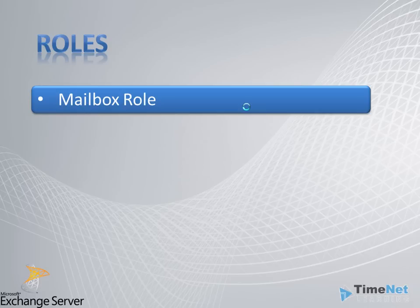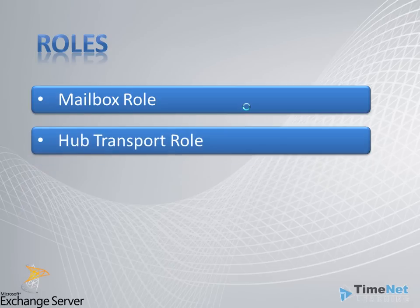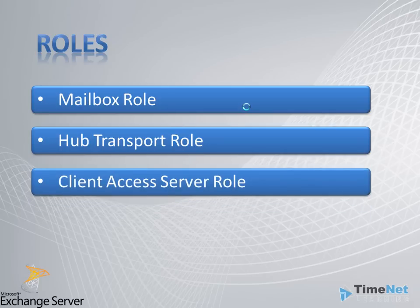The first role is the Mailbox Store, which is responsible for saving all emails. It is considered the most important role because all mails and databases are saved on this server. Next is the Hub Transport role, where all email going in and out of the Exchange server is processed. The Hub Transport role controls email transportation using transport rules and routing policies, deciding which email goes to which server.